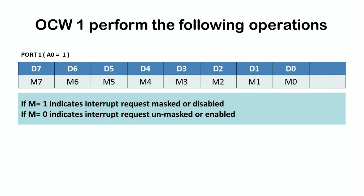The first operational command word is OCW1. For OCW1, the A0 line of the 8259 PIC equals 1. The operation of OCW1 is to mask or unmask a particular interrupt request. For example, if bit D0 equals 1 and D1 equals 0, the interrupt request on IR0 is masked or disabled. If D1 equals 0, the interrupt request on IR1 will be accepted, that is unmasked. By making D0 to D7 bits 0 or 1, we can enable or disable interrupt requests on lines IR0 to IR7.